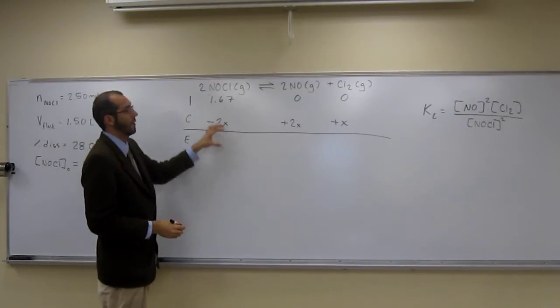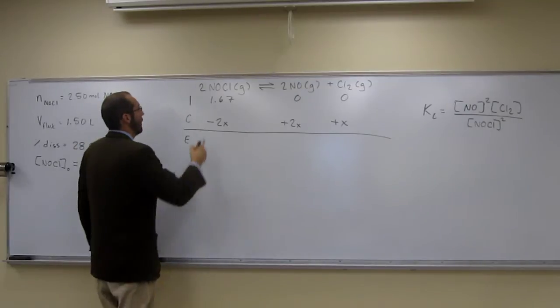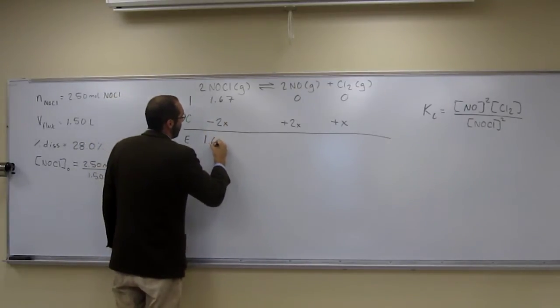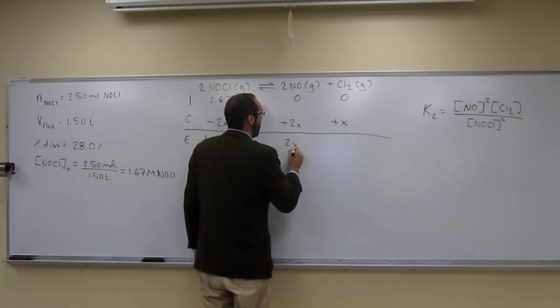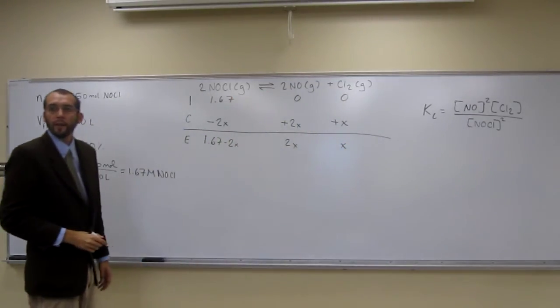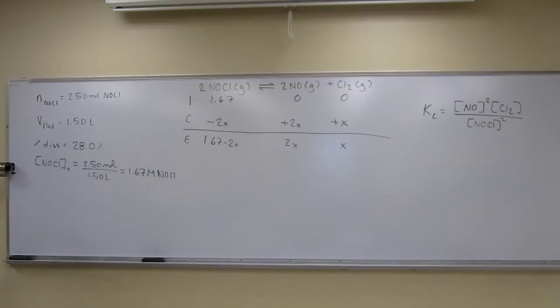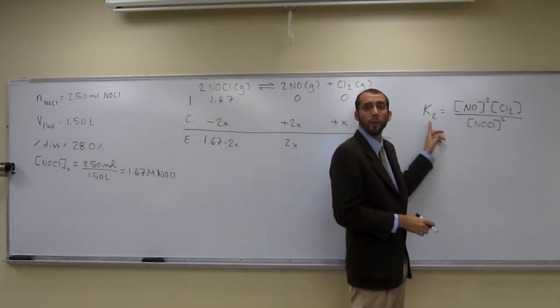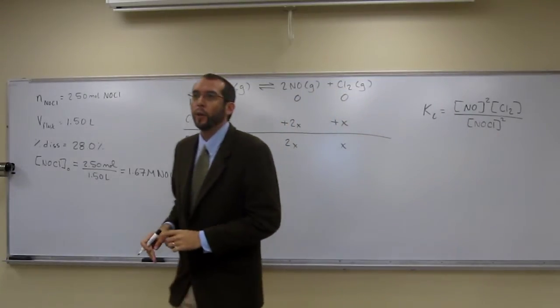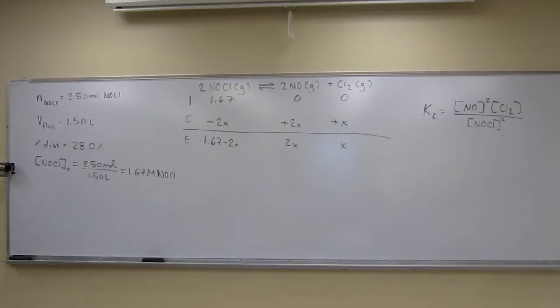From this, we're going to subtract, we're going to add, and we're going to add. We're going to do the number of coefficients. So we're going to do minus 2x plus 2x plus x. Are we cool with that? Let's go ahead and solve these three expressions. 1.67 minus 2x is 1.67 minus 2x. 0 plus 2x is 2x. 0 plus x is x. So hopefully you can see, we're probably going to need to solve for x, especially since we don't have Kc. Most of the time we have this Kc, and we can do our quadratic formula or whatever and solve for x. But we can't do that this time. But we have this percent dissociation. So that really helps us out.